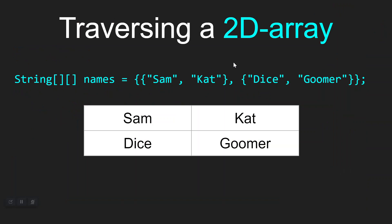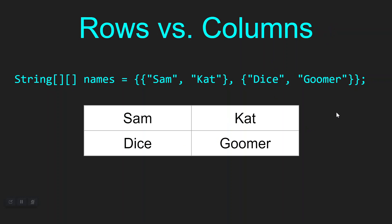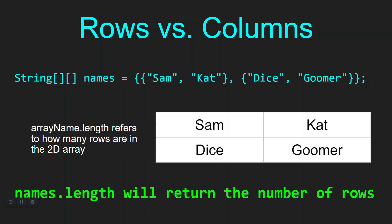Hopefully that was beneficial. Now let's look at a standard two-by-two two-dimensional array of strings. We have a two-dimensional array of strings called names. It is storing Sam and Cat in our first row, and then Dice and Goomer in our second row. We have to remember that you have rows versus columns when dealing with two-dimensional arrays.